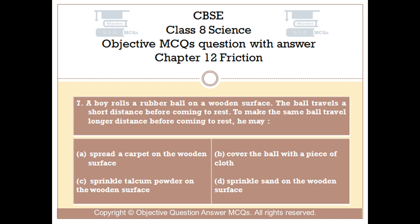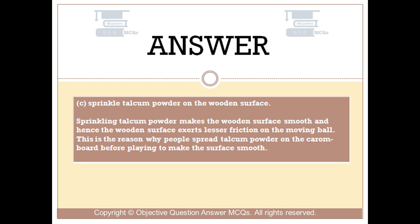The right answer is Option C: Sprinkle talcum powder on the wooden surface. Sprinkling talcum powder makes the wooden surface smooth and hence the surface exerts lesser friction on the moving ball. This is the reason why people spread talcum powder on the carom board before playing, to make the surface smooth.